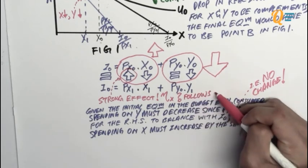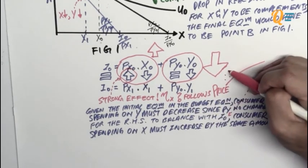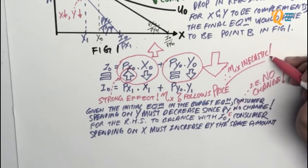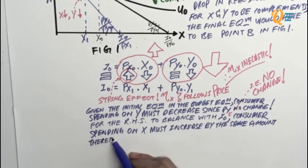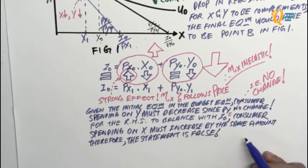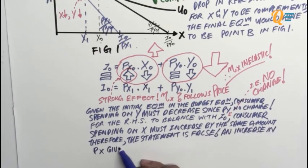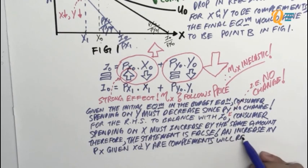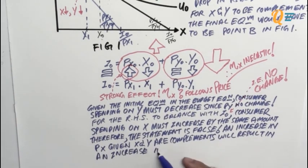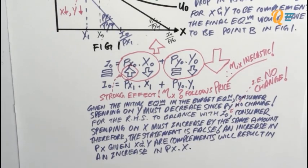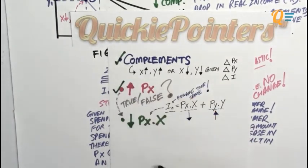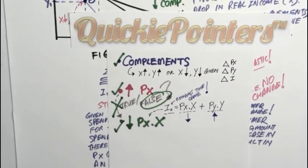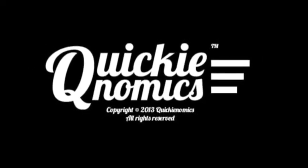You will notice that the change in consumer expenditure actually follows the change in price. Therefore, we can conclude that the price elasticity of demand for good X is actually inelastic. Going back to the answer to complete it: therefore, the statement is false. An increase in the price of X, given that X and Y are both complements, will result in an increase in the expenditure on X — not a decrease. That is why the statement is false. We have fulfilled all three quickie pointers. That's the answer, and thank you for studying with Quikinomics.